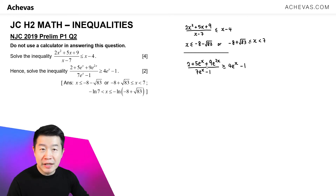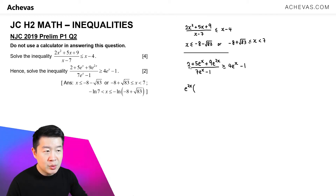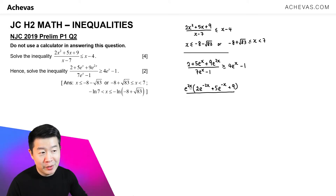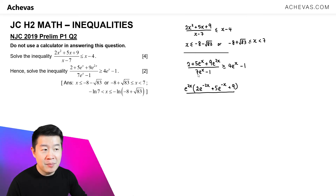Looking at the two expressions on the left hand side, the numerators share the same coefficients — it is just that the terms with the variable are different. To make them more similar, I am going to factorize out e to the power of 2x from the numerator. This converts the numerator to e to the power of 2x times 2e to the power of minus 2x, plus 5e to the power of minus x, plus 9. The numerator now looks very similar in structure, with coefficients 2, 5, and 9 matching, where the variable terms are in terms of e to the power of minus x.